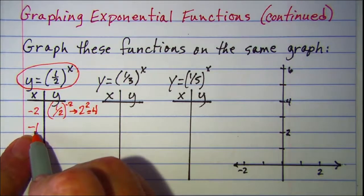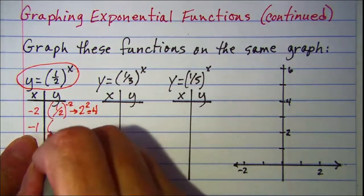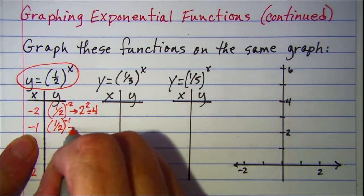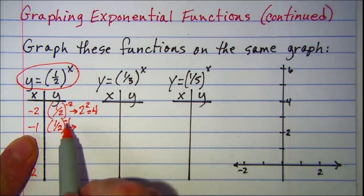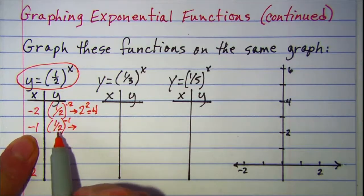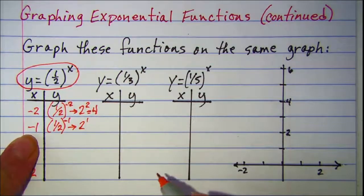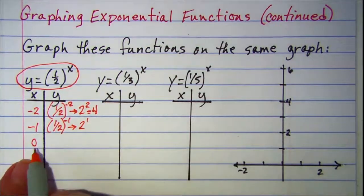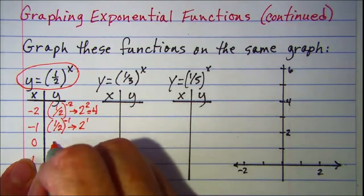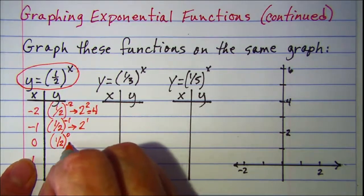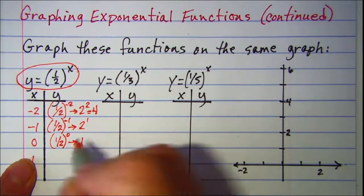When x is negative 1, we have one half raised to the negative 1. The negative on this exponent makes this become 2 over 1, or 2, so we have 2 to the first power. When x is 0, we have one half raised to the 0 power, and anything to the 0 power is 1.